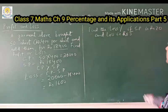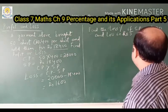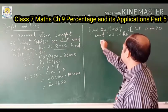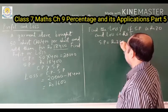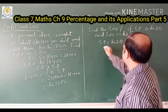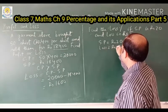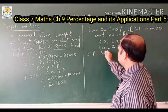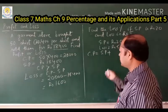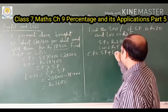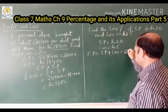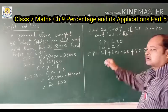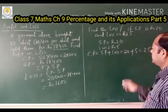Now we will solve another question. Find the loss percentage if SP is 20 rupees and loss is 5 rupees. SP = 20 rupees and loss = 5 rupees are given. First find the cost price: Cost Price = Selling Price + Loss = 20 + 5 = 25 rupees.